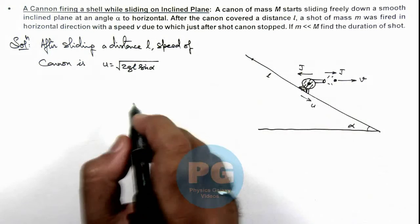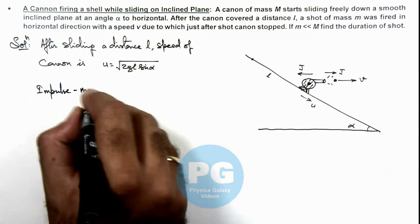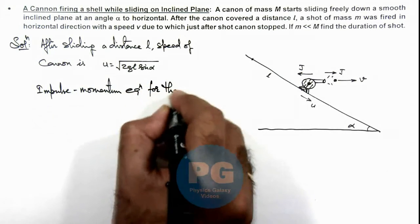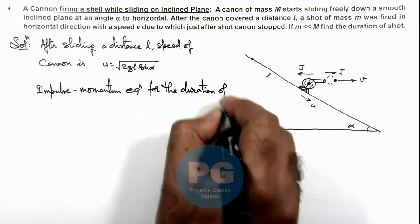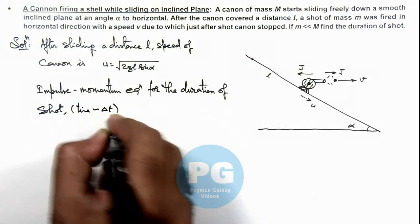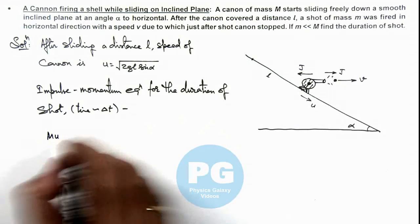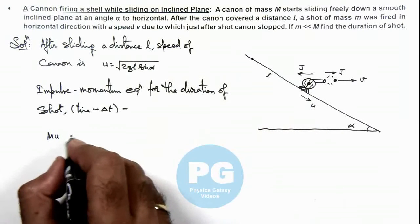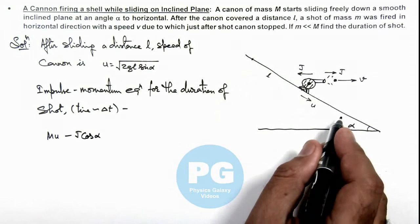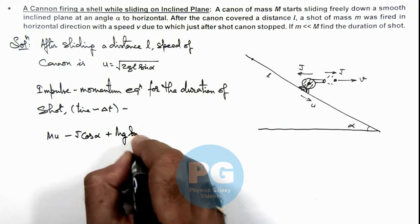Just after the shot, the cannon is stopped. We write the impulse-momentum equation for the duration of the shot, delta t. The initial momentum of the cannon is Mu. It experiences an impulse J in the opposite direction, so we write minus J cosine alpha, which is along the direction of motion of the cannon. The weight impulse acting downward can be written as Mg sine alpha times delta t.